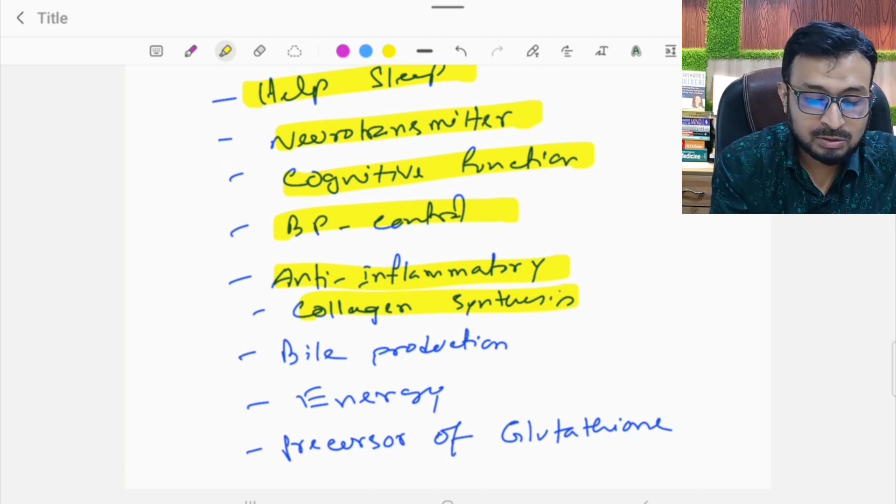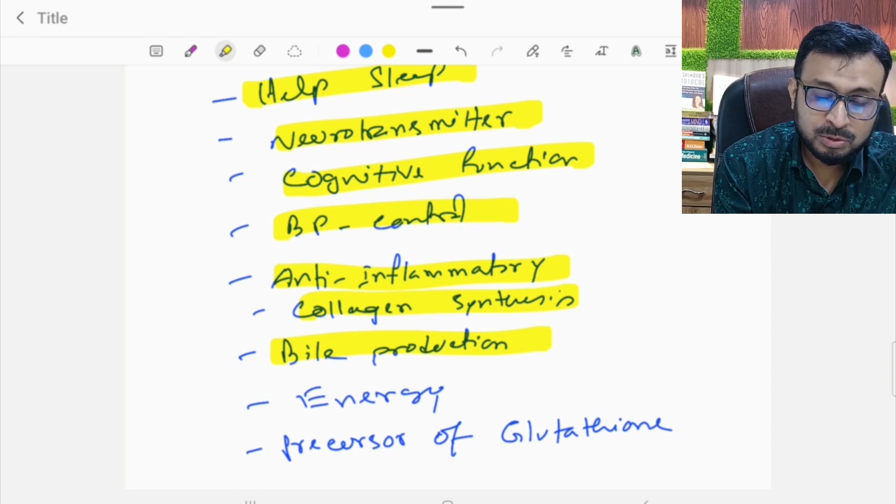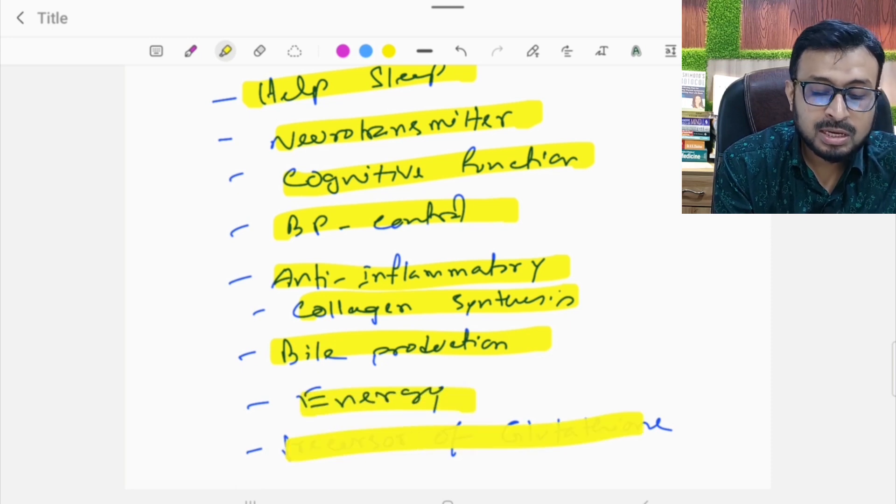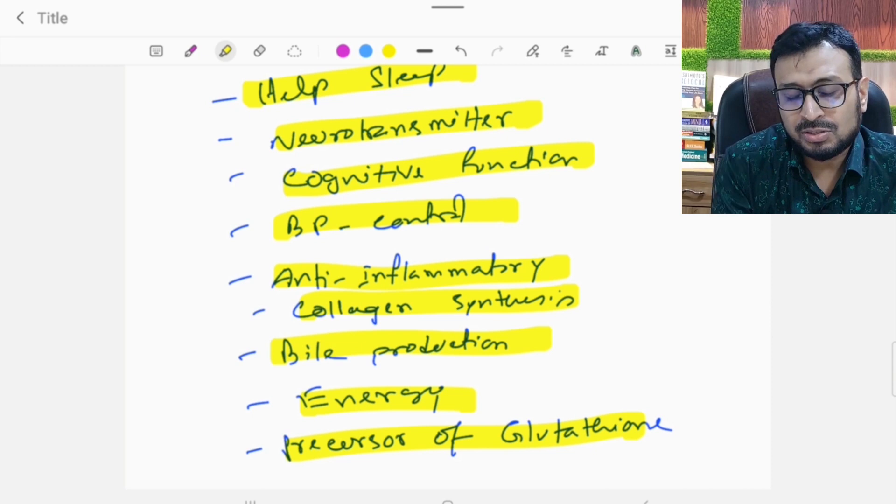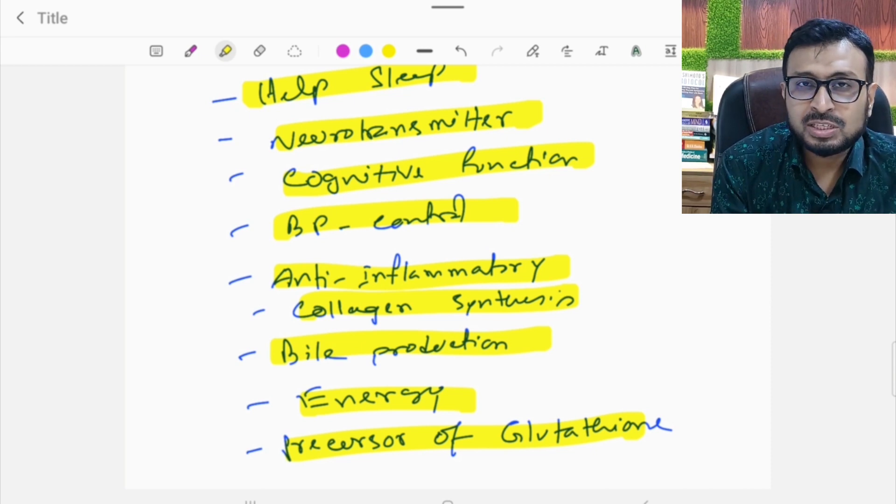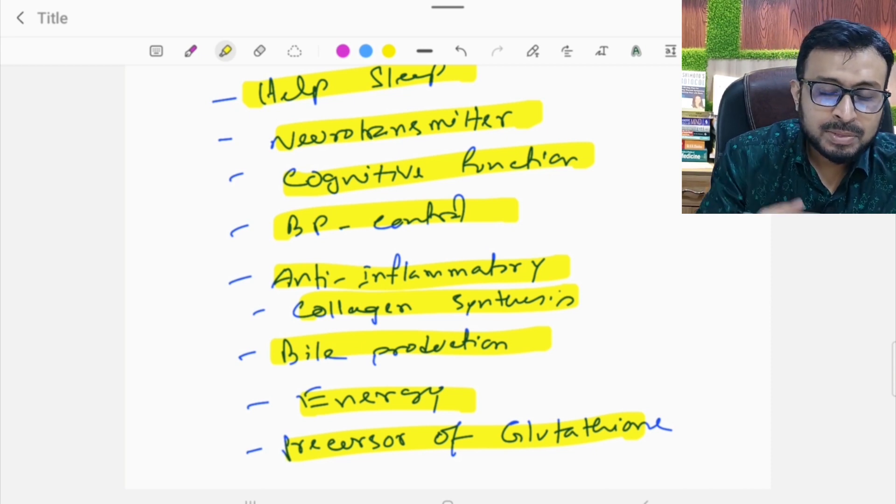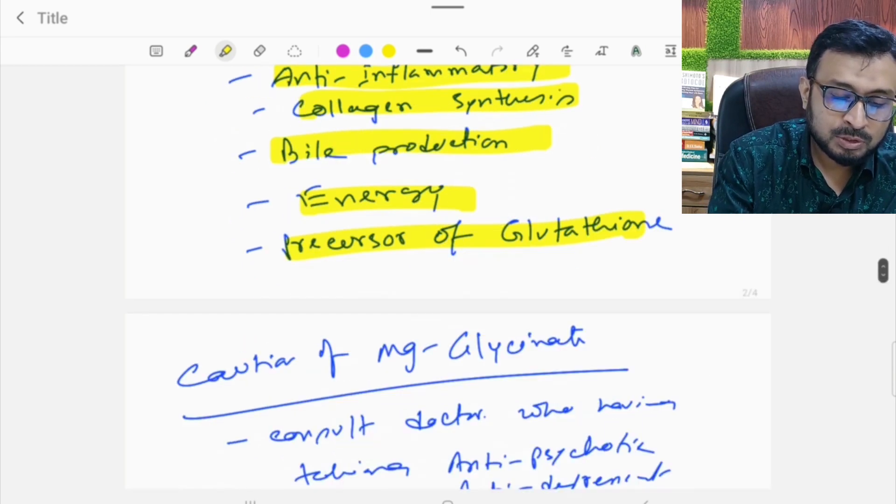Glycine is very important. It helps with bile production, blood production, and energy production. It is a precursor of glutathione. Glutathione is a super antioxidant which helps with liver detoxification. Glycine promotes glutathione.